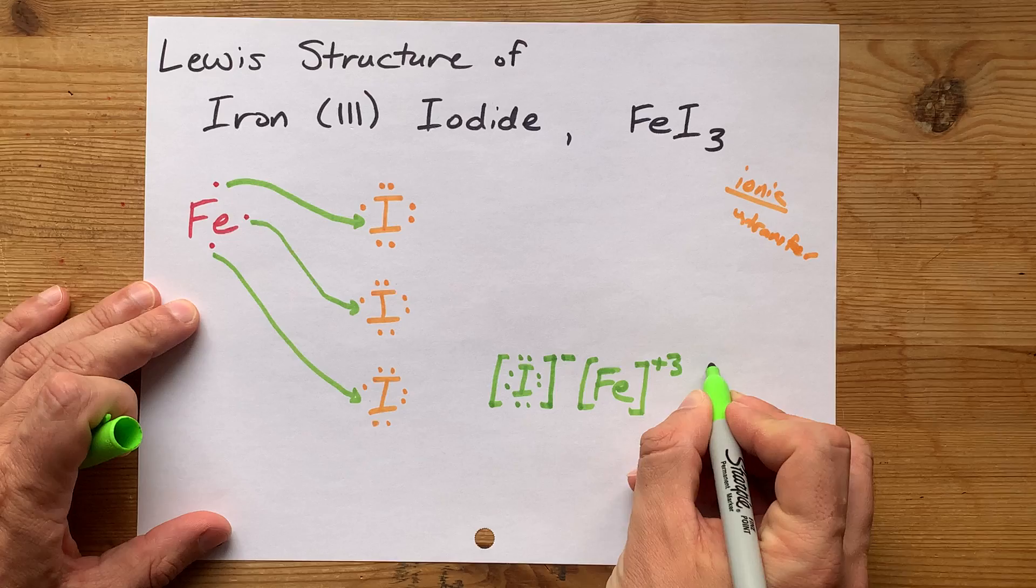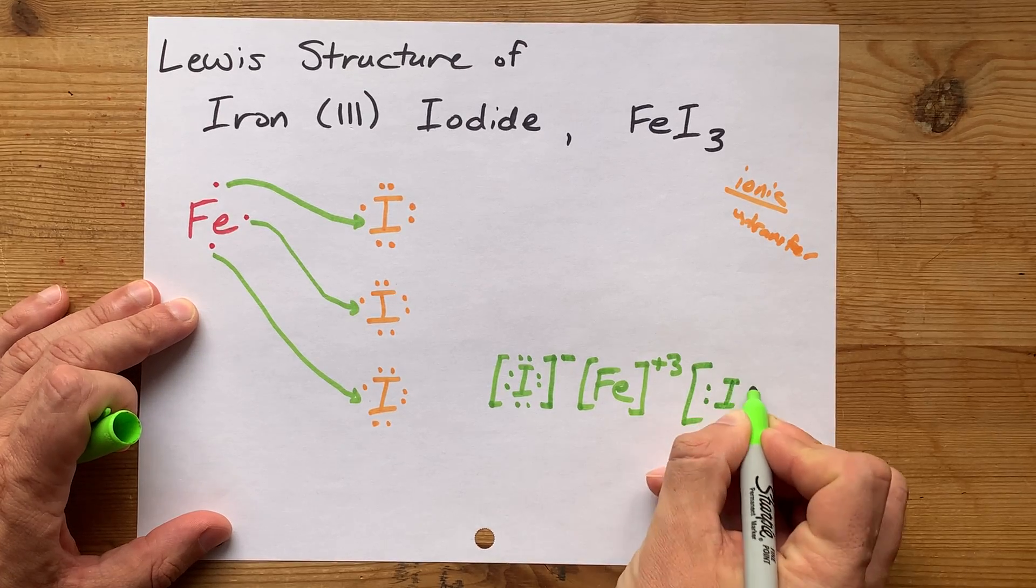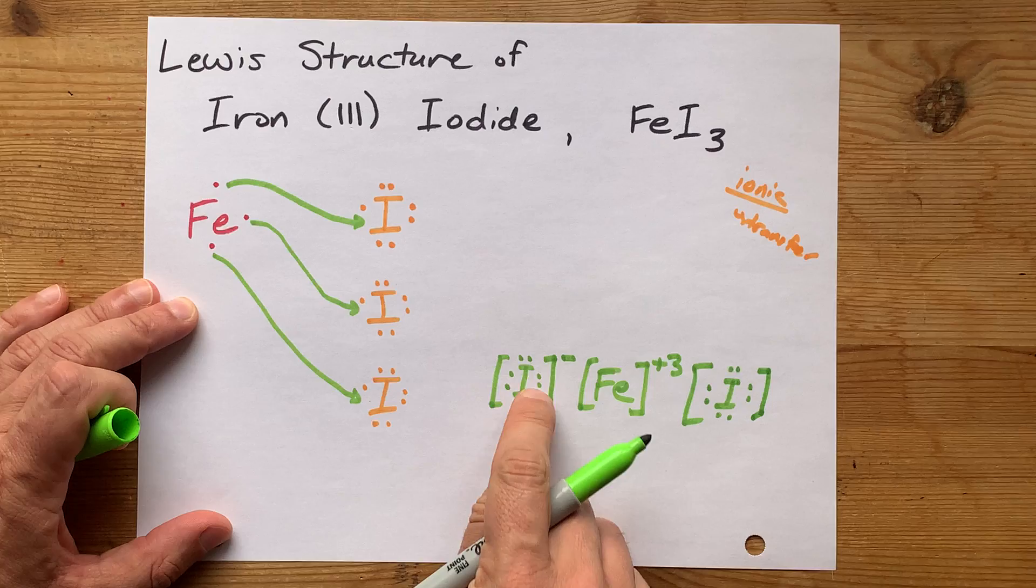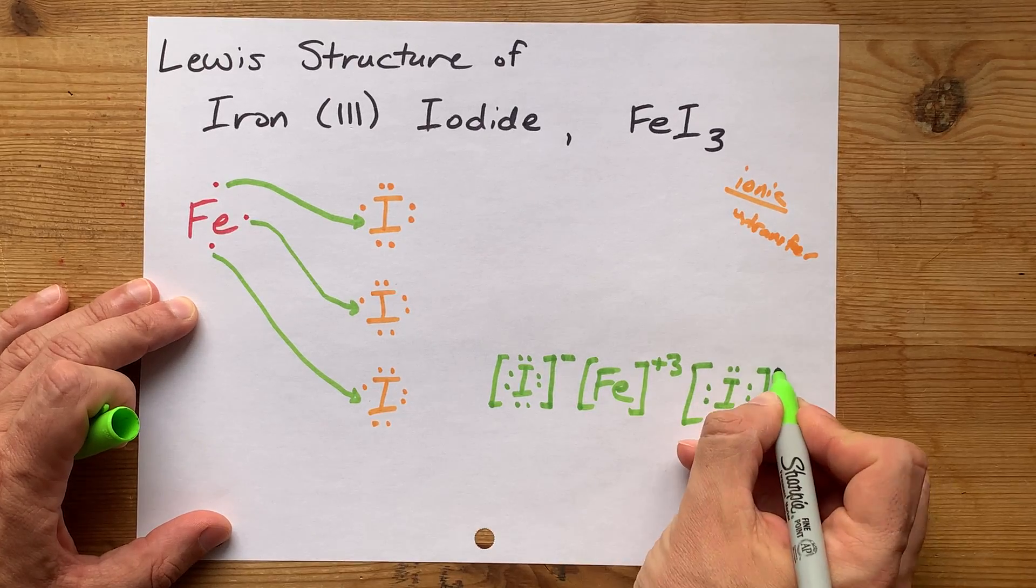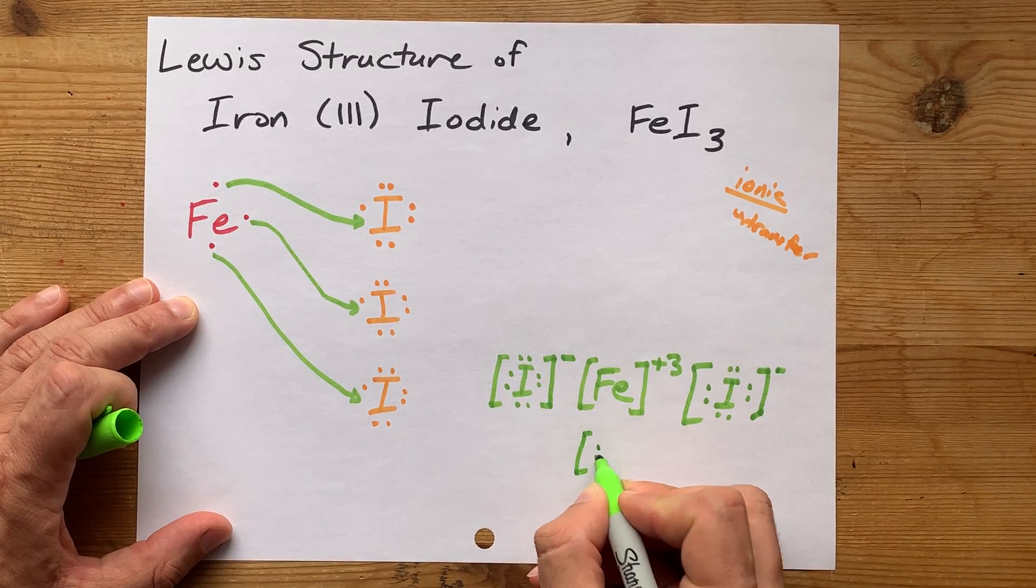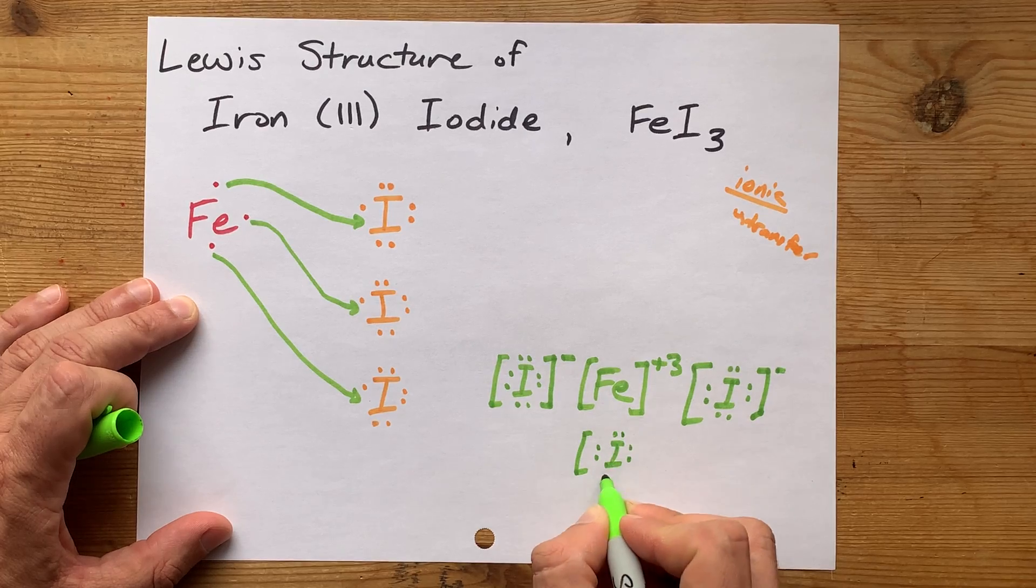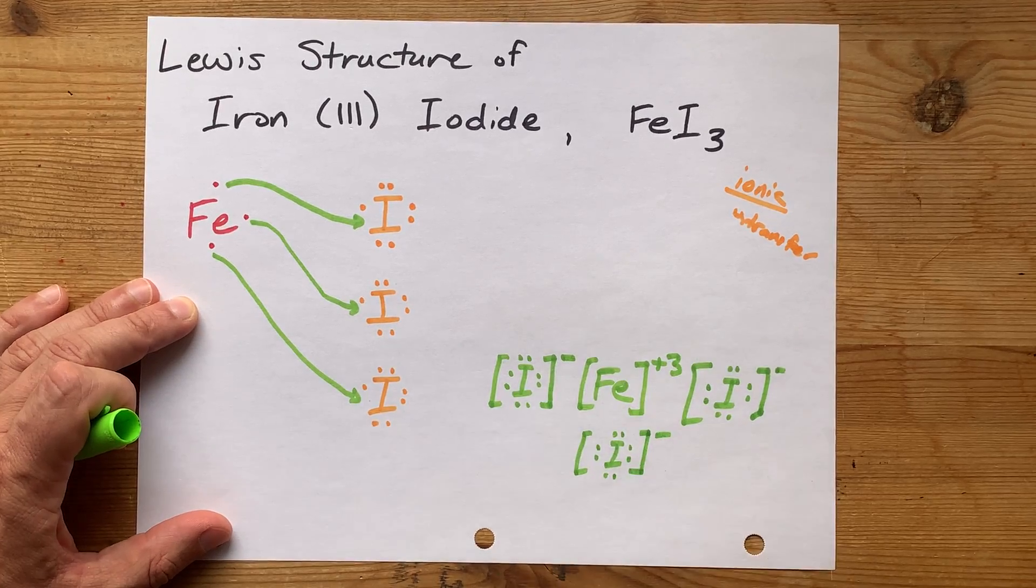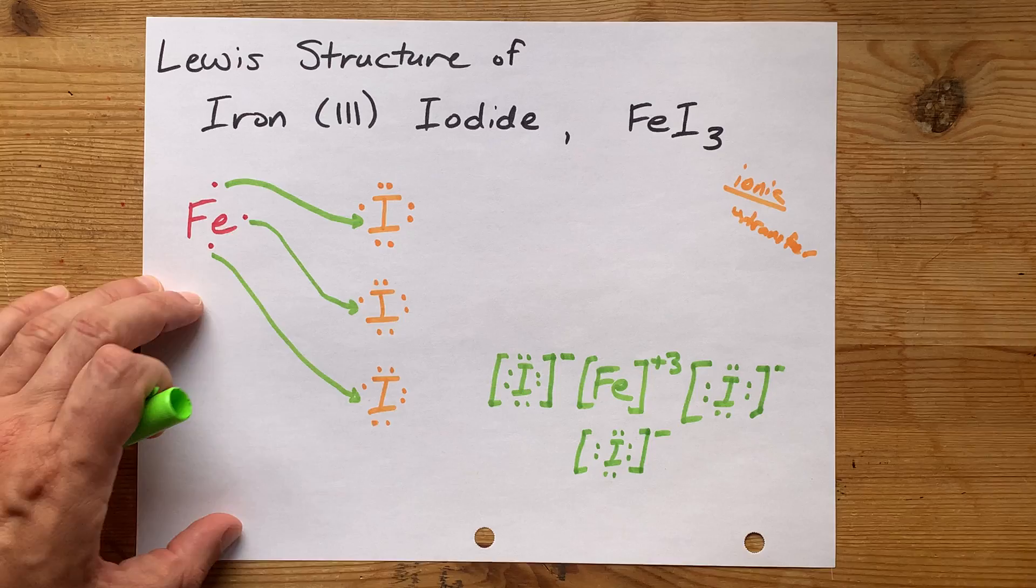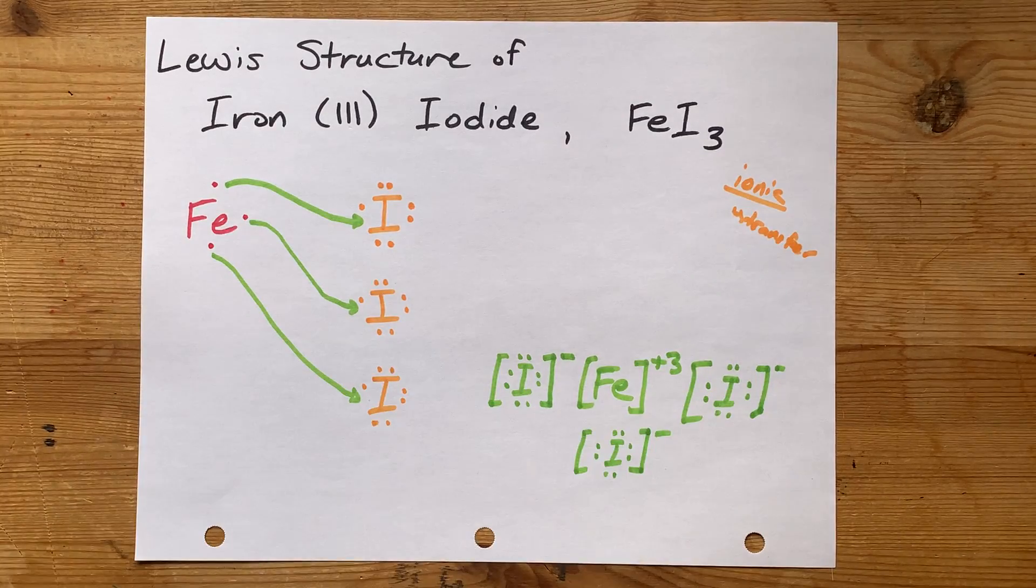Now, officially, you should probably draw that out 3 times. If your teacher allows you to just write it once and then do times 3, hey, go for it. It's a shortcut, and if you're allowed to do it, do it. But otherwise, I wouldn't risk it. I would just draw 3 of them. And this here is the complete Lewis structure.